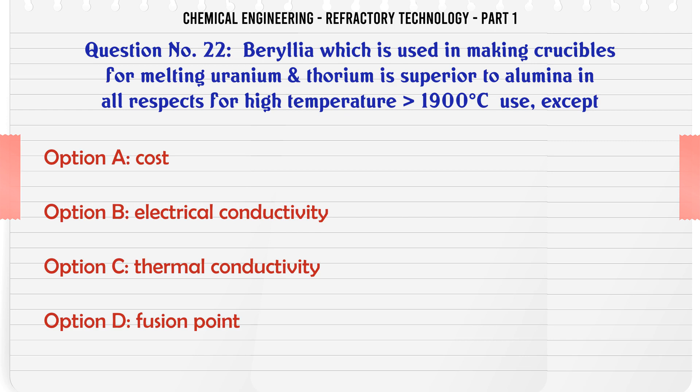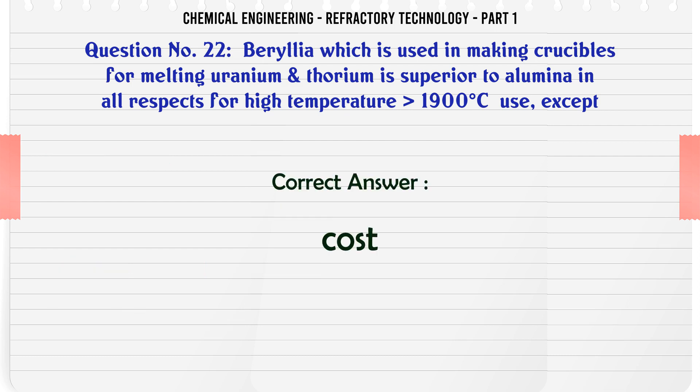Beryllia, which is used in making crucibles for melting uranium and thorium, is superior to alumina in all respects for high temperature (1900°C) use, except: A. Cost, B. Electrical conductivity, C. Thermal conductivity, D. Fusion point. The correct answer is Cost.